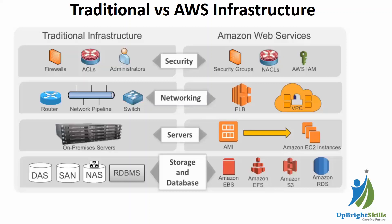For the server layer, in traditional infrastructure we maintained our own data centers and ran our own servers, creating virtual instances on top of them. In AWS, we don't have to worry about physical hardware — we can immediately deploy virtual instances. For creating a virtual instance, we use Amazon EC2 — Amazon Elastic Cloud Compute — and we use an image file called AMI, which stands for Amazon Machine Image.